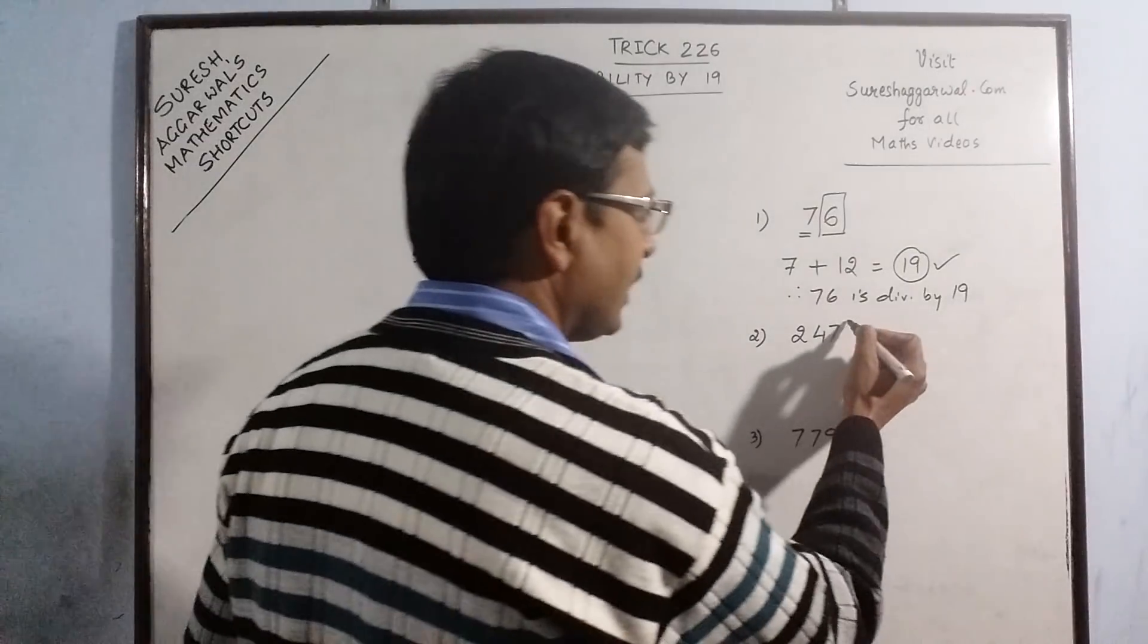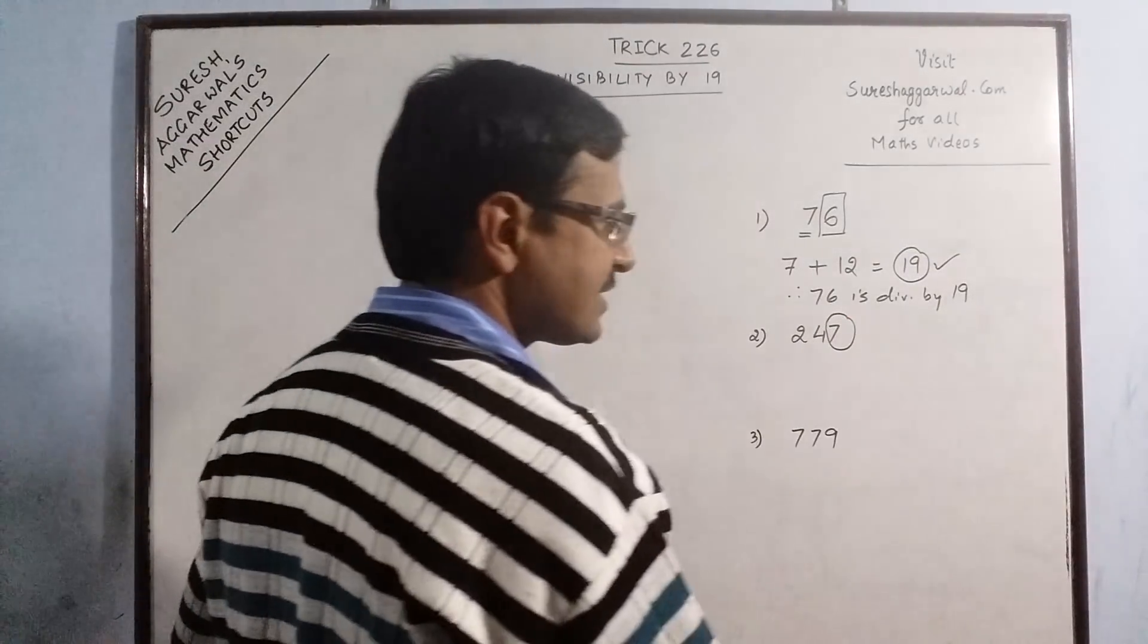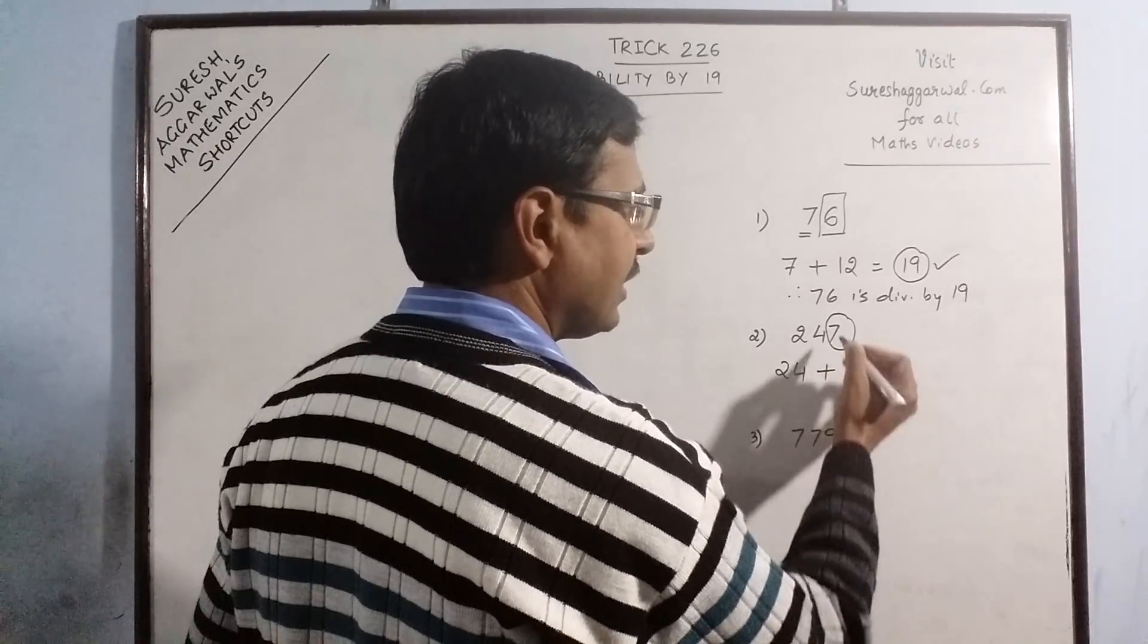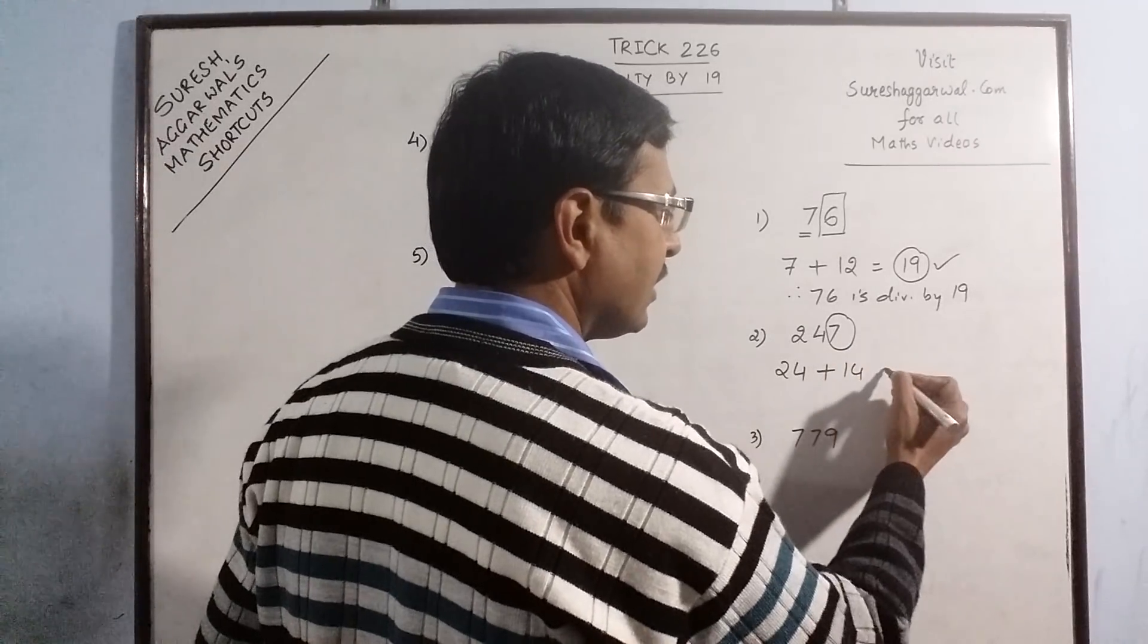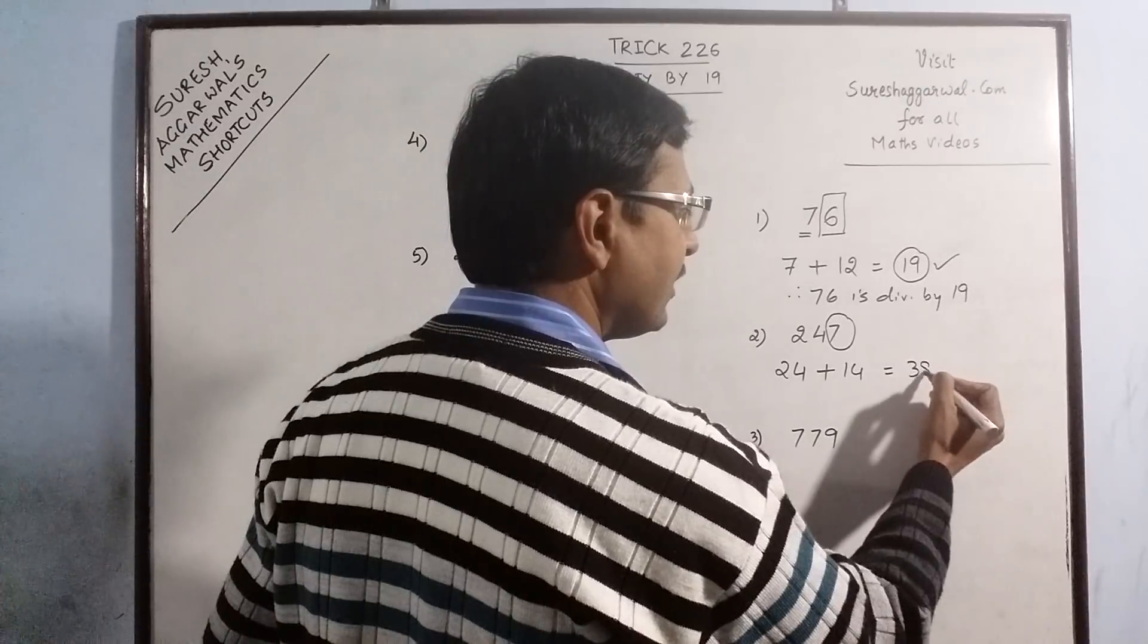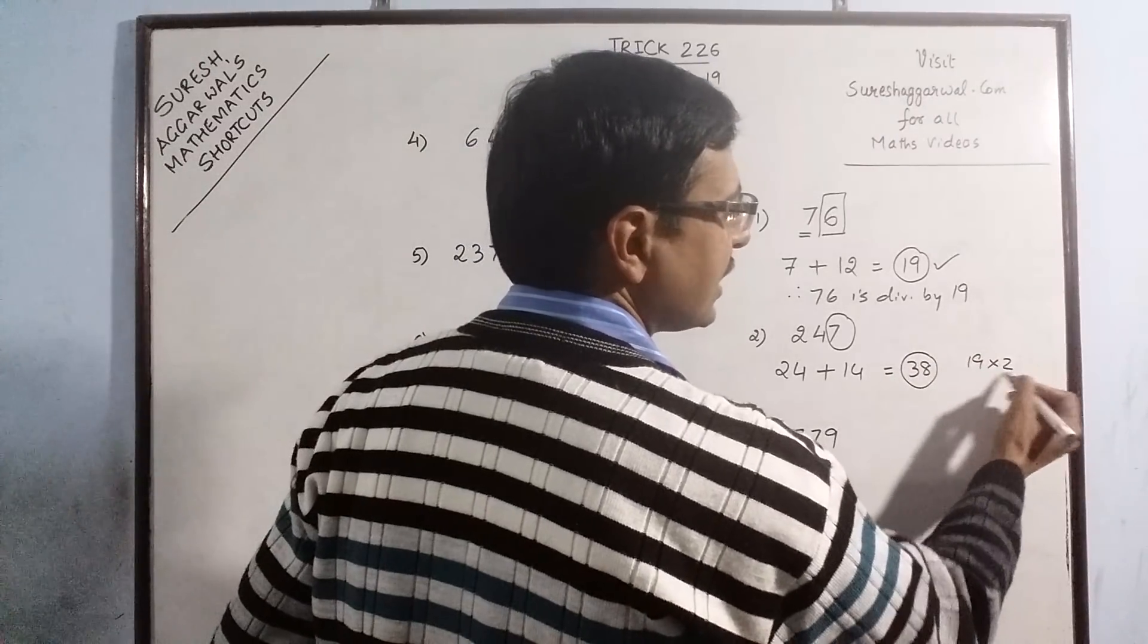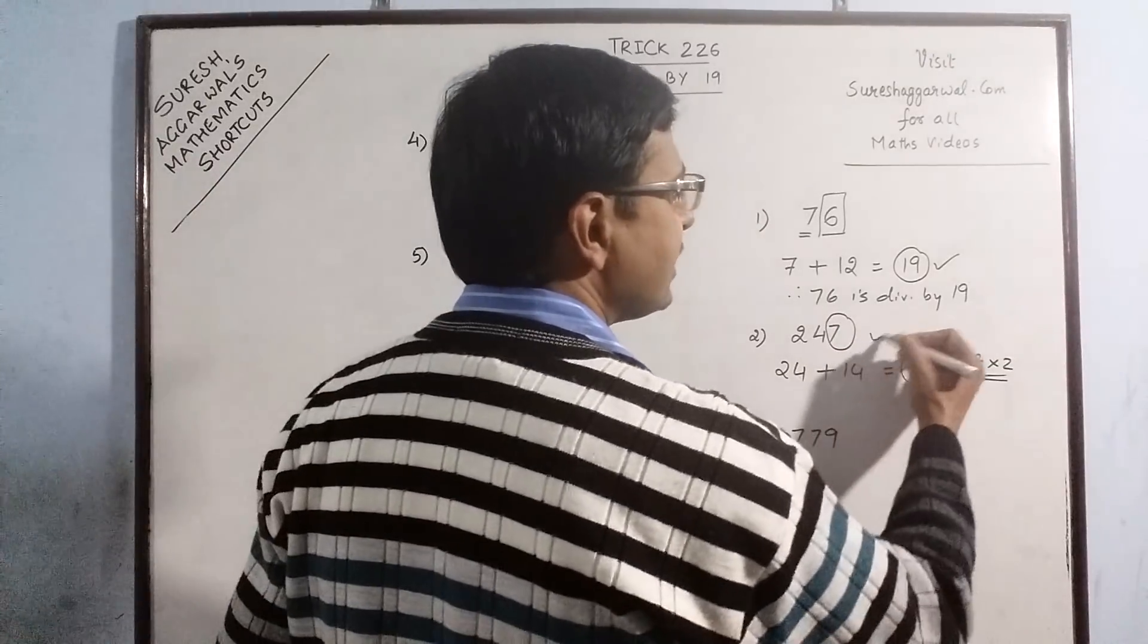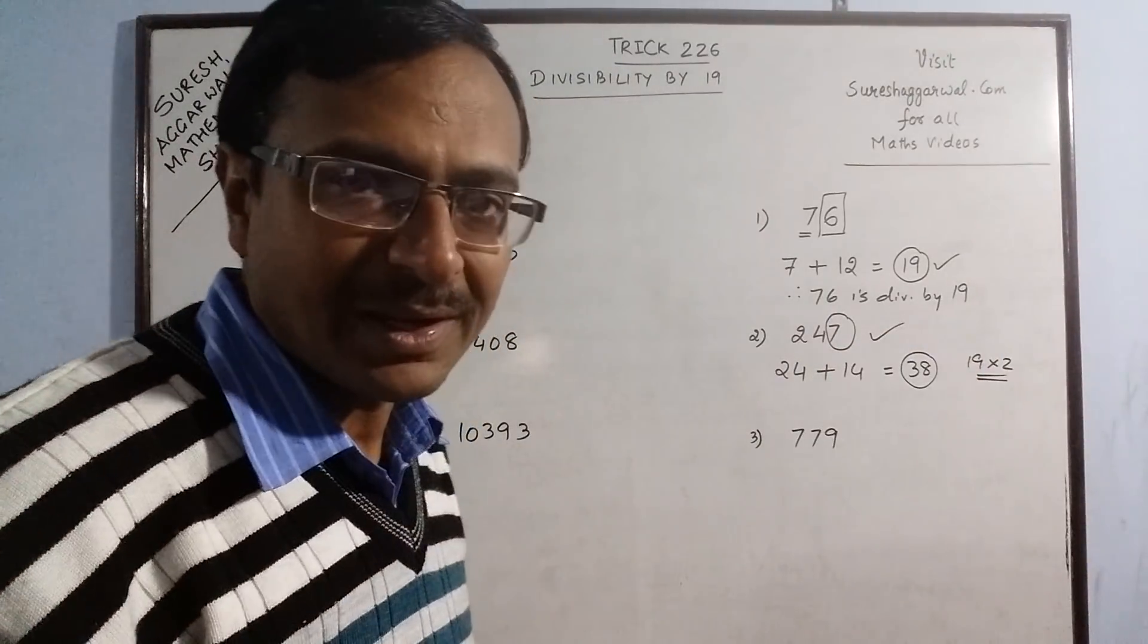Now see, here we have 7 as the unit space. What is left behind is 24. Add double of 7, that is 14. You get 38. And obviously, 19 into 2 is 38. So 247 is divisible by 19.